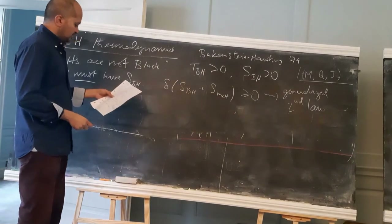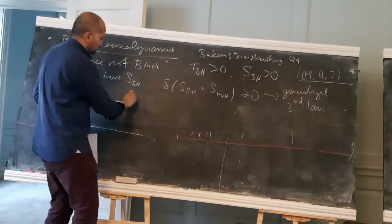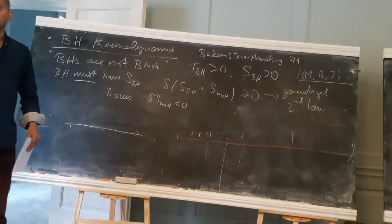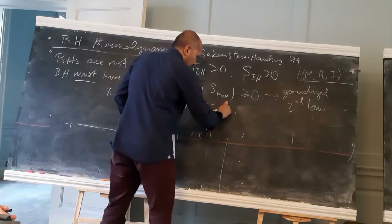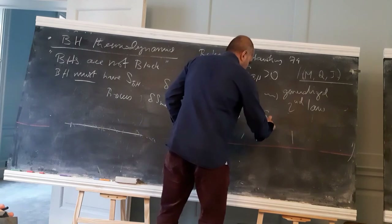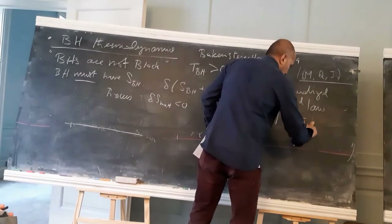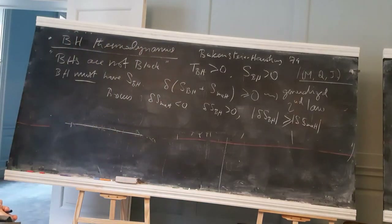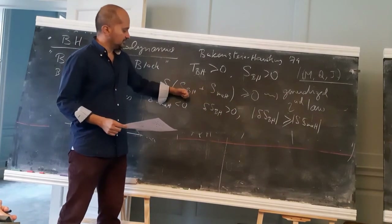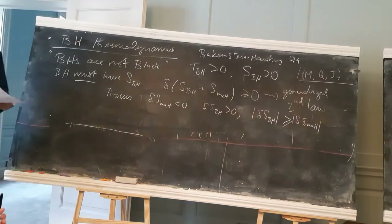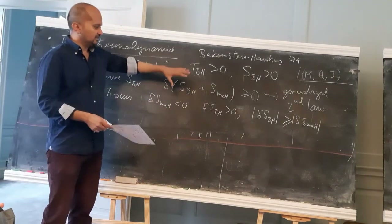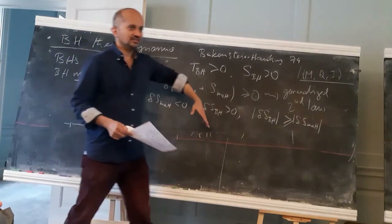This has a profound physical meaning. Imagine a process where ΔS_matter is negative — you're throwing something in, losing entropy from outside. Then ΔS_BH must be positive and at least equal in magnitude to what you lost. This means that whatever you throw in — a cup of tea, an elephant, quark-gluon plasma — the nature of a black hole is such that it's able to store entropy much better than anything else in the universe.